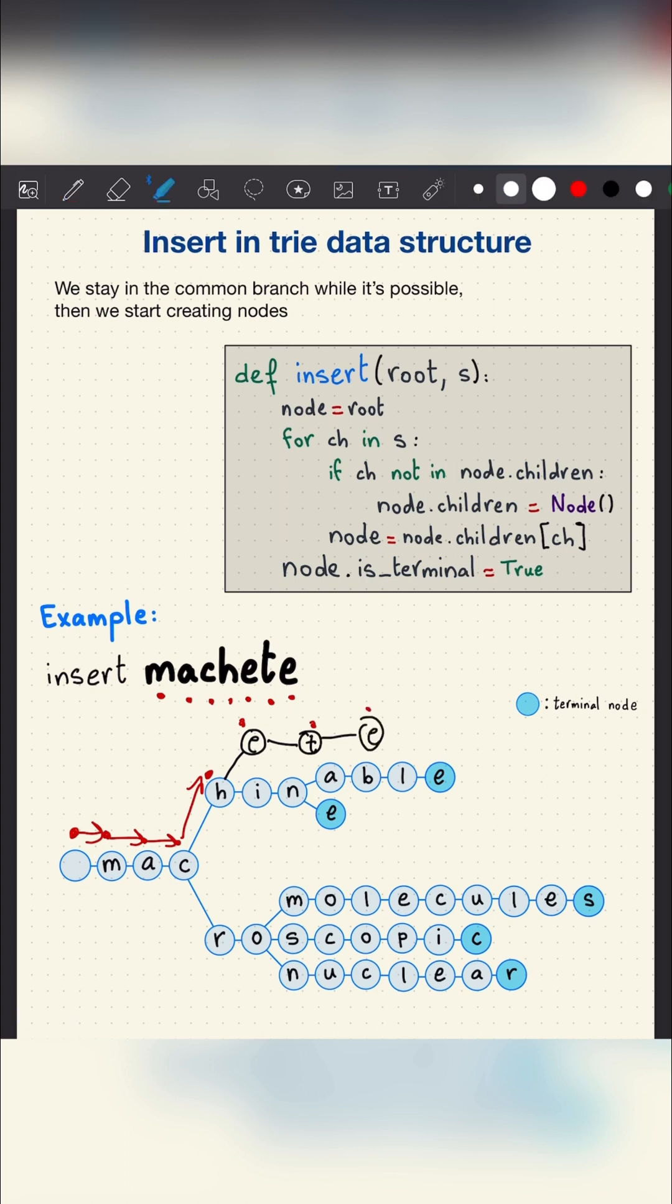We finish traversing characters, so we set the current node to a terminal node. And we inserted the word MASHATI.